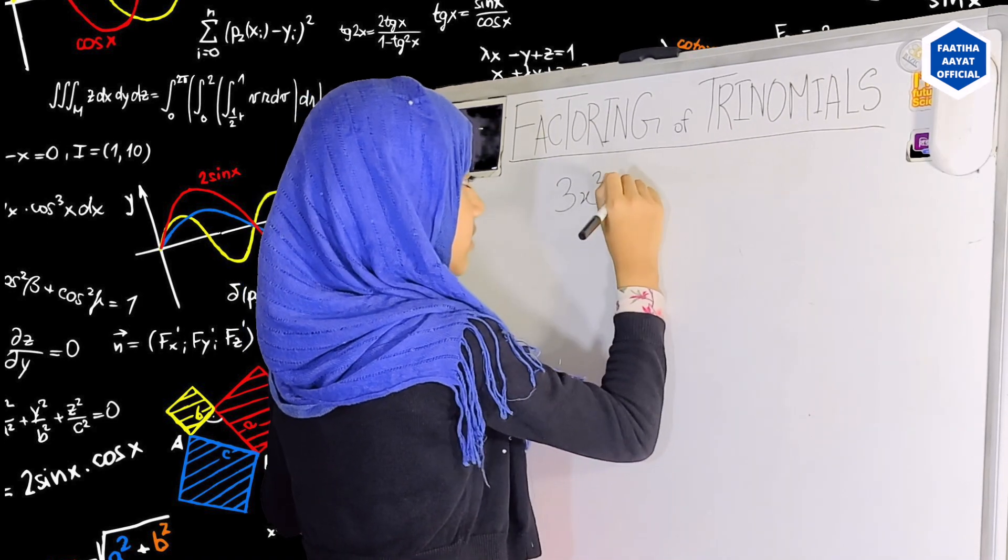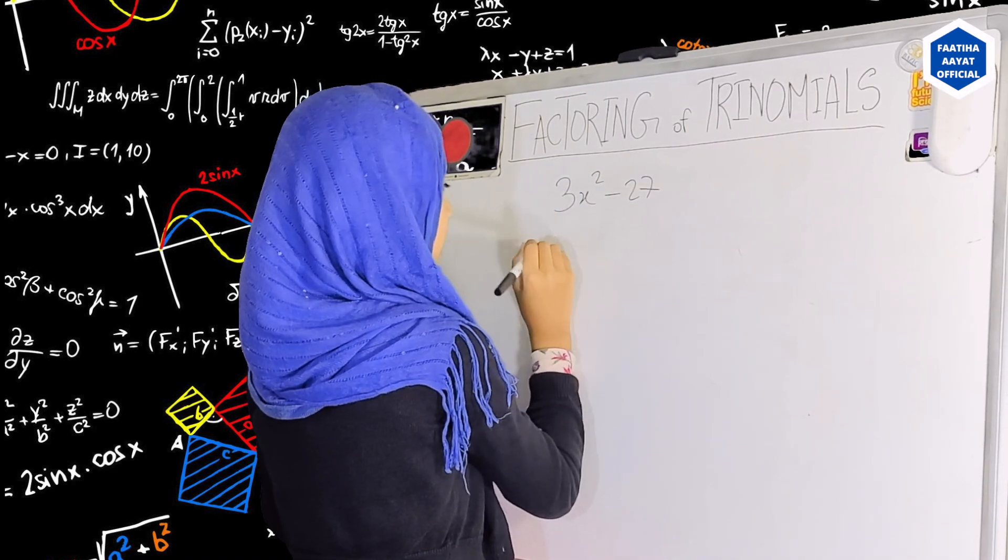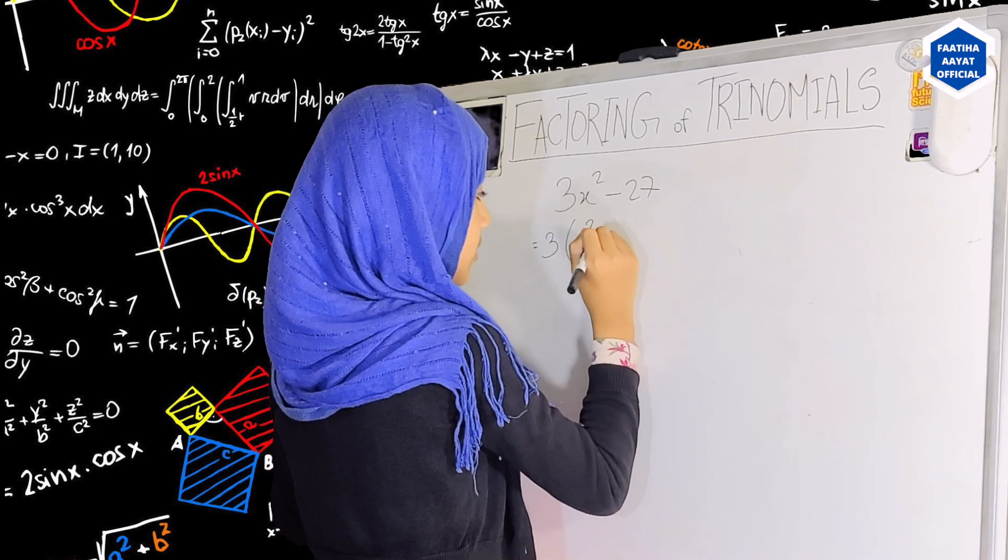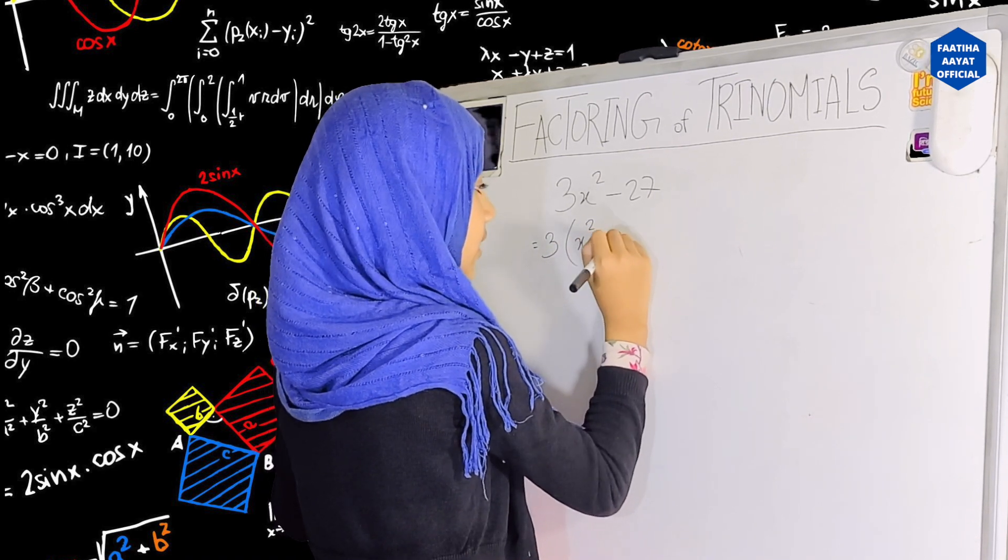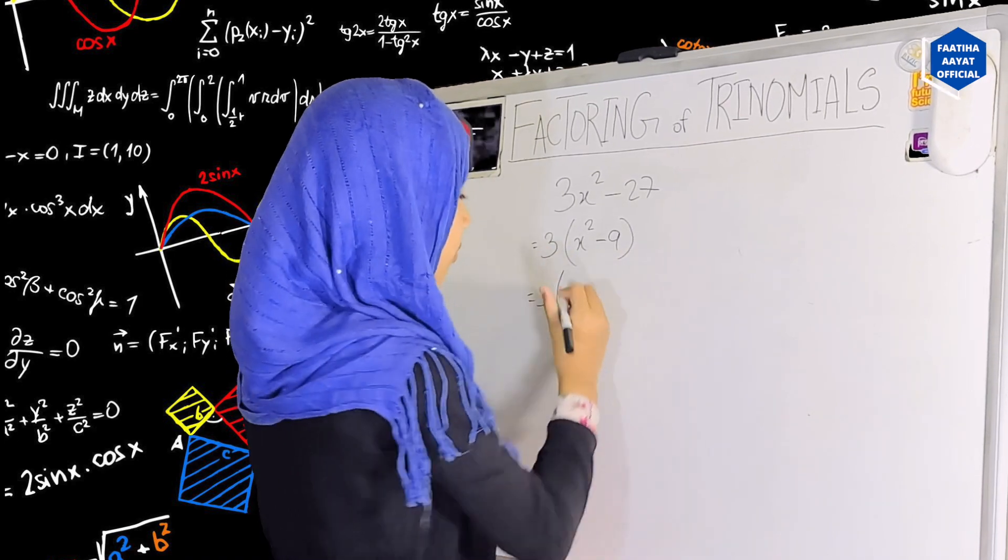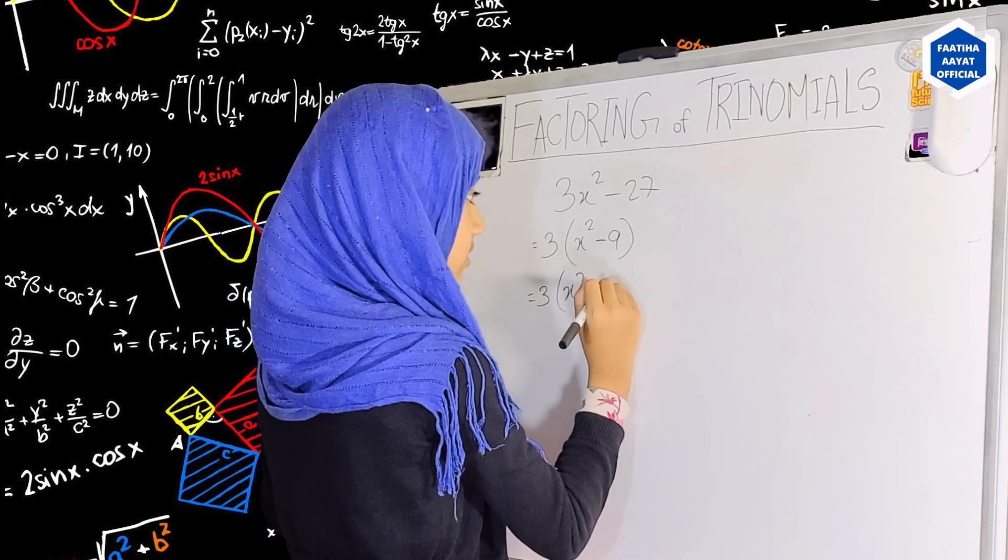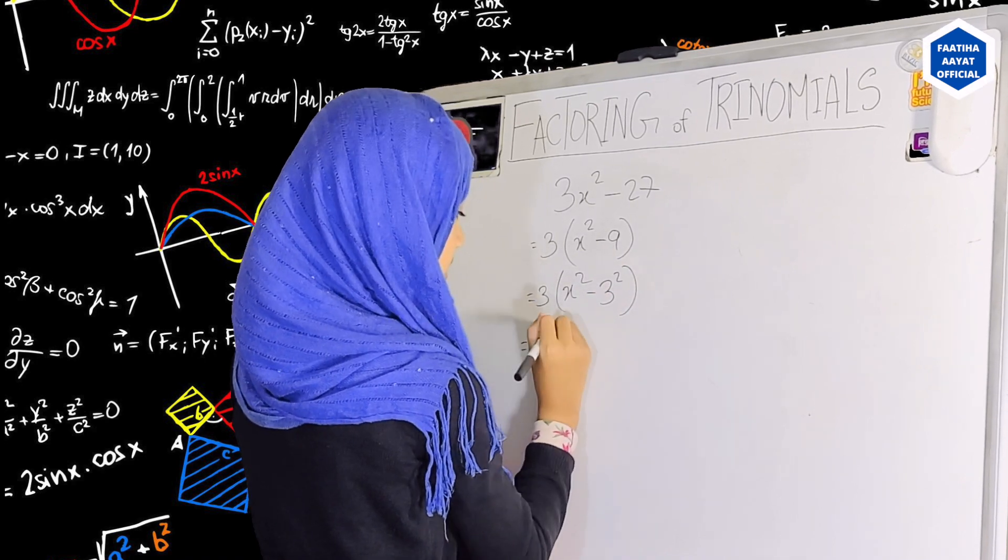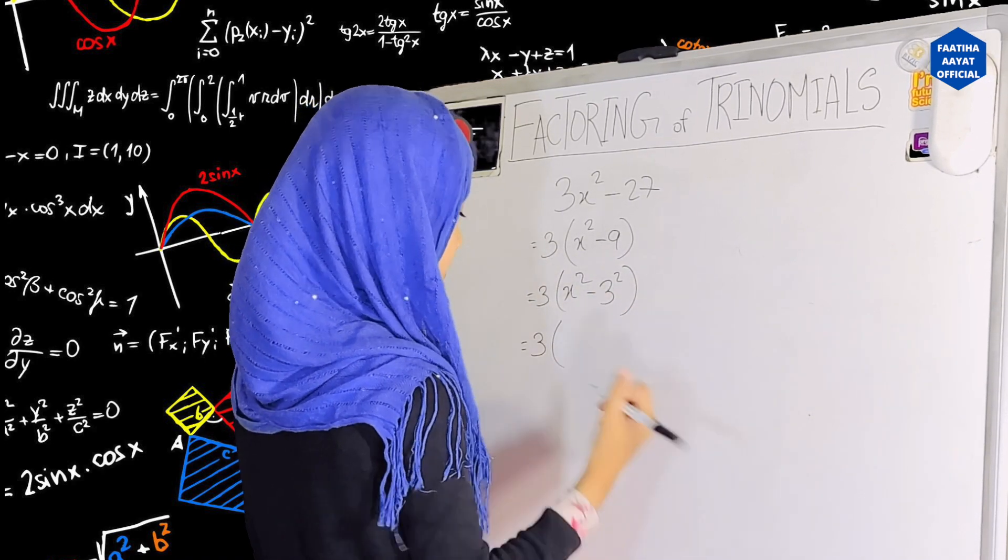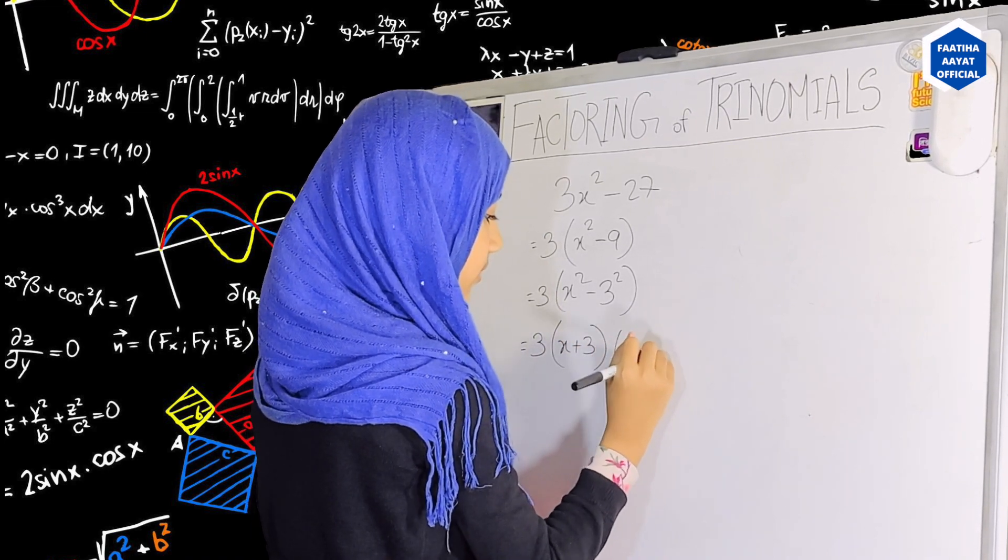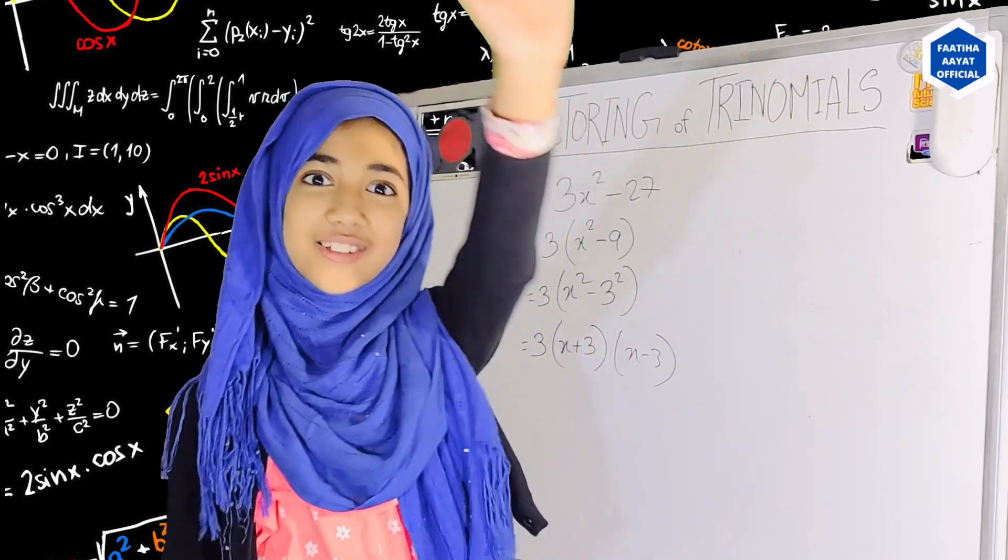3x squared, yeah. How will you do now? Okay, then I'll take the 3 common as I did before. x squared minus 9. Alright, now what will you do? 3 just as before, x squared minus 3 squared equals to 3. Here I'm going to do, wait what, okay yeah, x plus 3, x minus 3. This should be answered. Thank you.